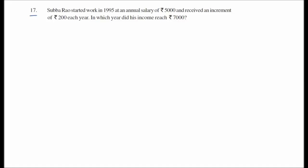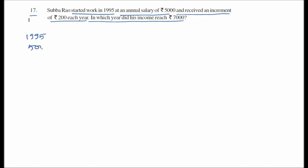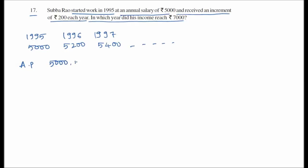Question 17: Subaru started work in 1995 with an annual salary of 5000 and received an increment of 200 each year. In which year did his income reach 7000? The AP is: 5000, 5200, 5400... so a equals 5000 and d equals 200.